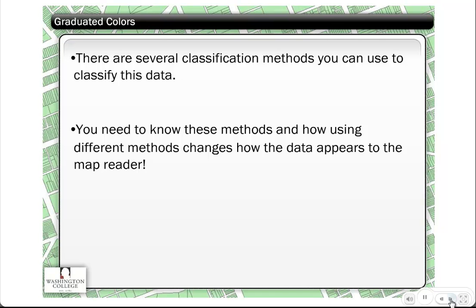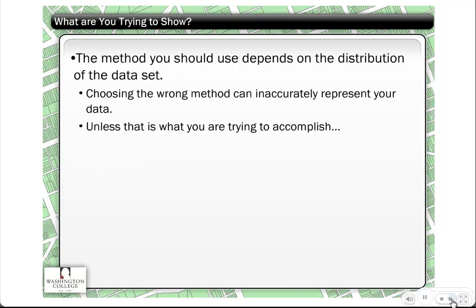There are many classification methods you can use in graduated colors, and you should know what these methods are and how the different methods change how your maps appear. The method you use depends on the distribution of your data — you need to understand the range of values. If you don't use the correct method appropriate to your data, you could end up with an inaccurate representation in the map, unless that's intentionally what you're trying to accomplish.